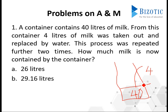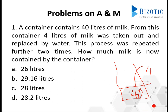You have options for that. So it cannot be like they took out 4, 4, 4 — 12 liters total — and then poured water, giving 28 liters. That cannot be possible because every time when they take out milk, they pour water. So this cannot be the answer. You can directly eliminate it.